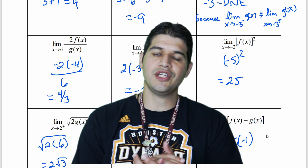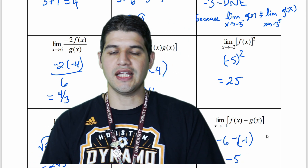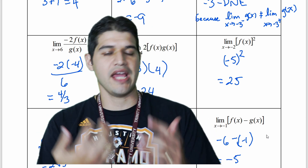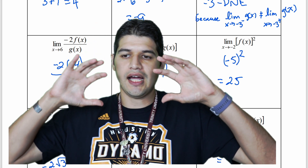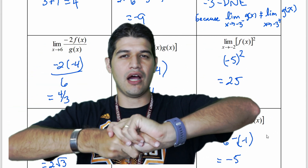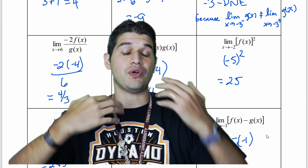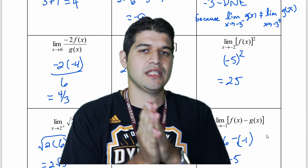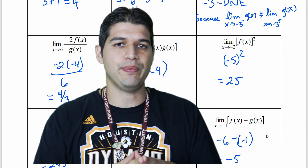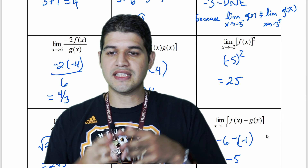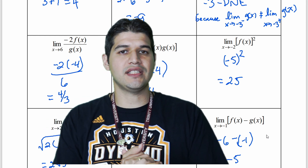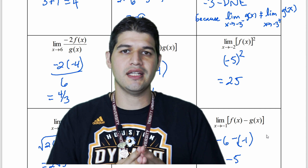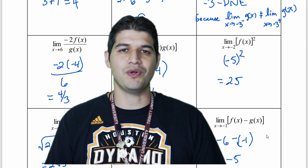That's how you use the properties of limits, tying in functions with graphs and tables. If you start bringing all this information together and connecting it to those older examples, you'll be set up for the AP exam. This concludes section 1.2. If you need any help, please reach out. I'm Mr. Hernandez, and I'm always here to help.